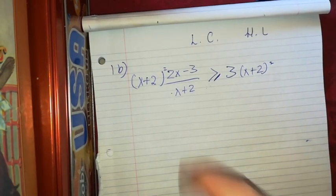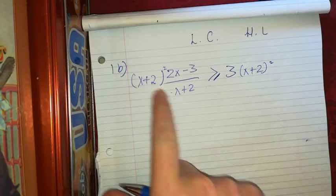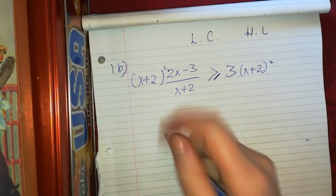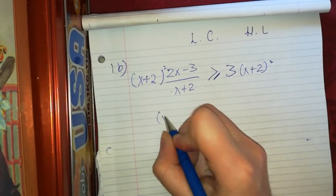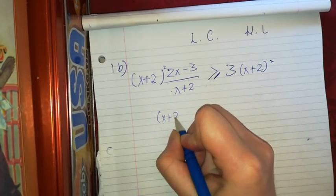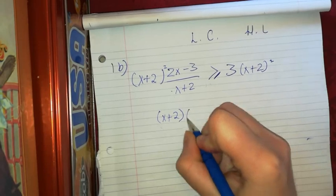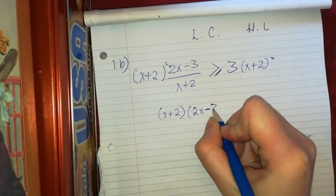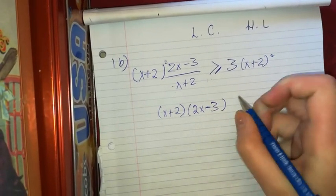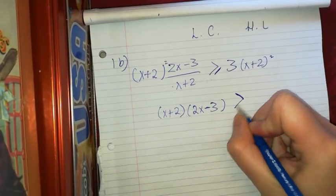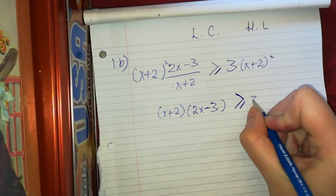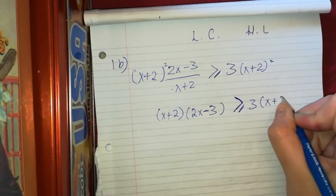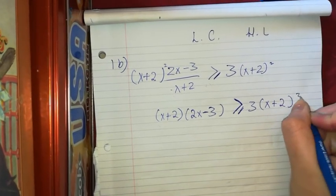On the top I have (x plus 2) squared and on the bottom I have (x plus 2), so it's just going to be (x plus 2) multiplied by (2x minus 3), and that is greater than or equal to 3 multiplied by (x plus 2) squared.